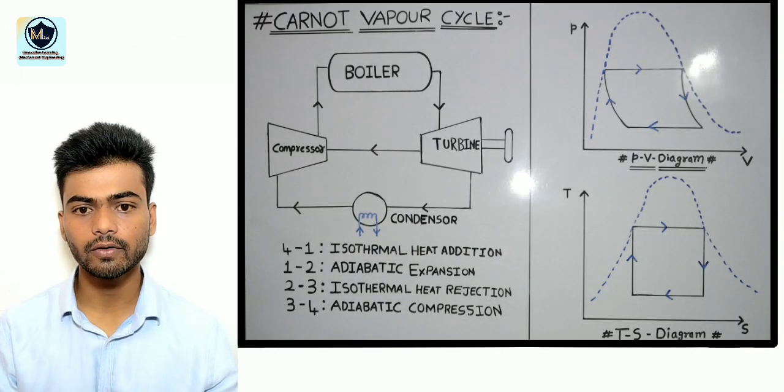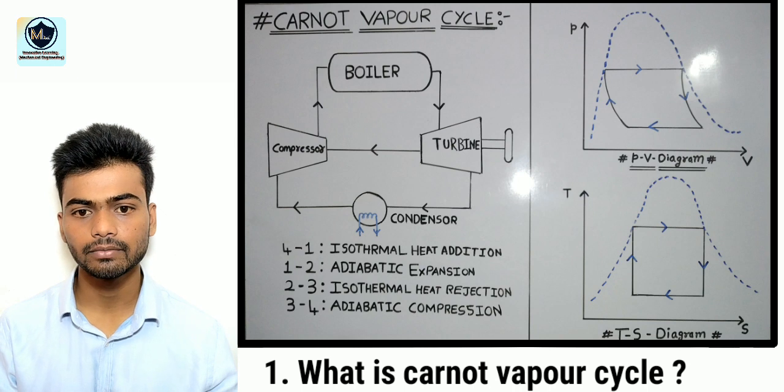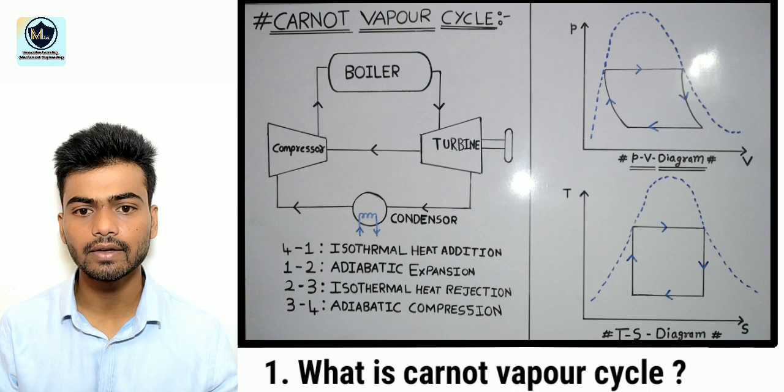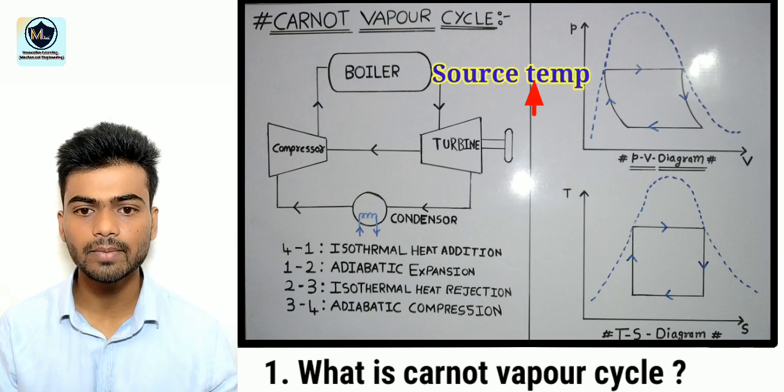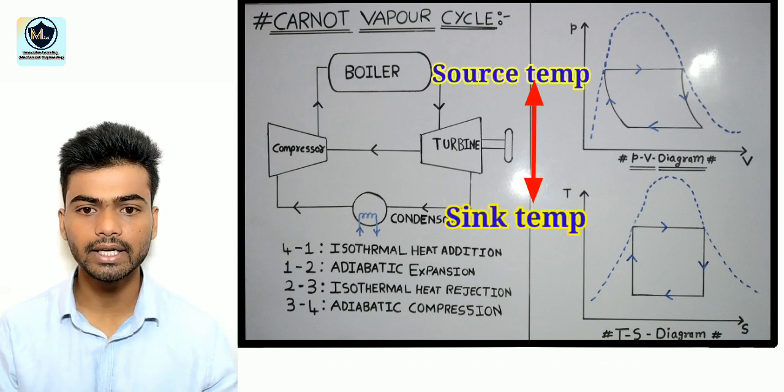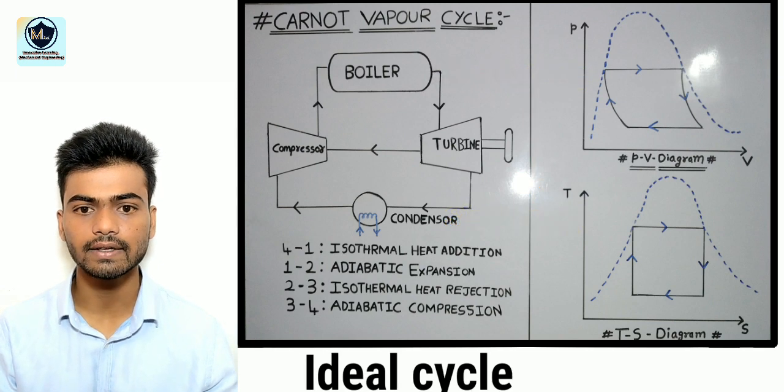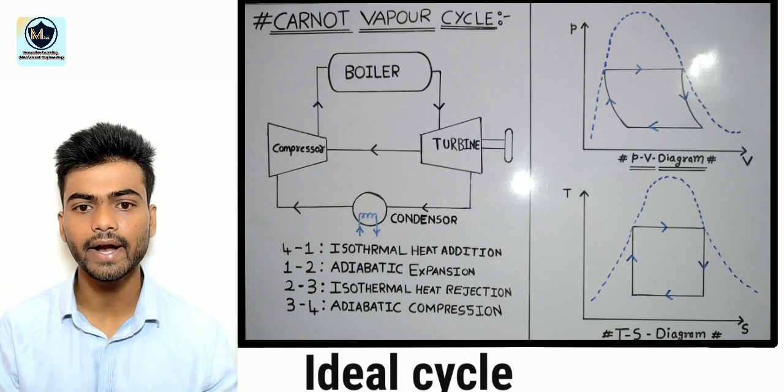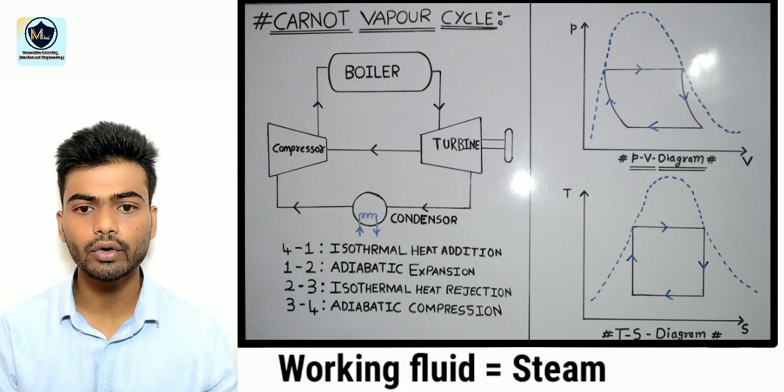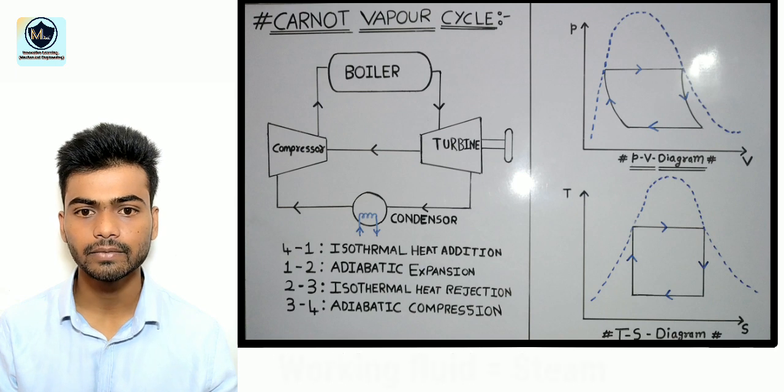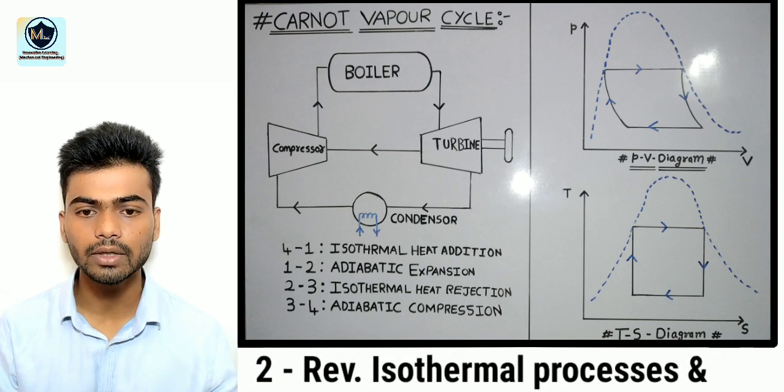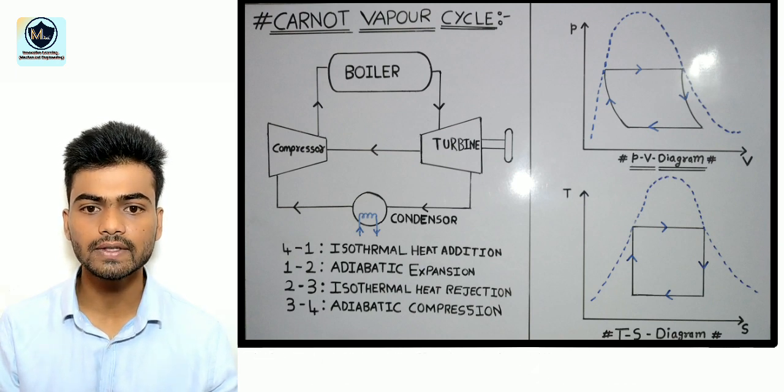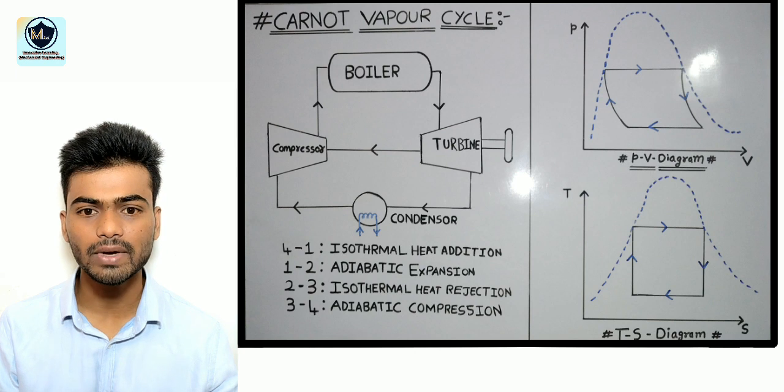Coming to the topic first of all what is Carnot Vapor cycle? It is the most efficient cycle operating between two specified temperature levels that is source temperature and sink temperature. It is adopted as an ideal cycle. In spite of its high thermal efficiency it is not considered as a practical cycle. Steam is the working fluid in Carnot Vapor cycle. It consists of two reversible isothermal processes and two reversible adiabatic processes. The processes involved in this cycle must be reversible.